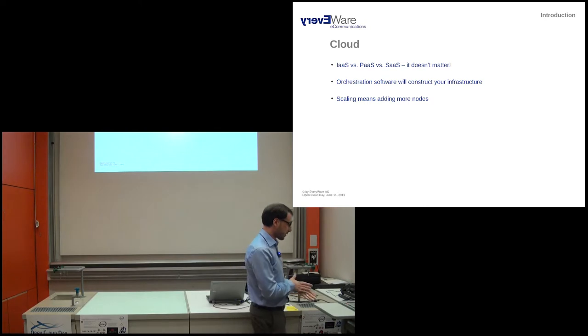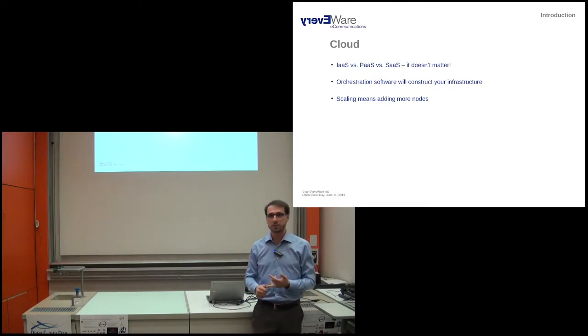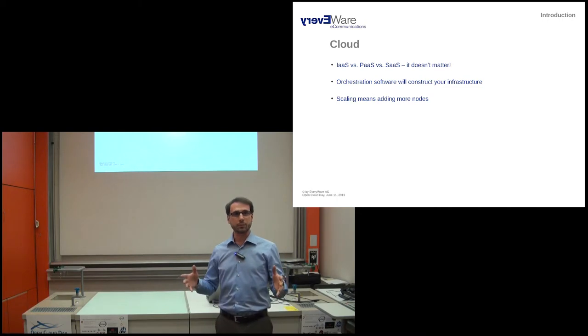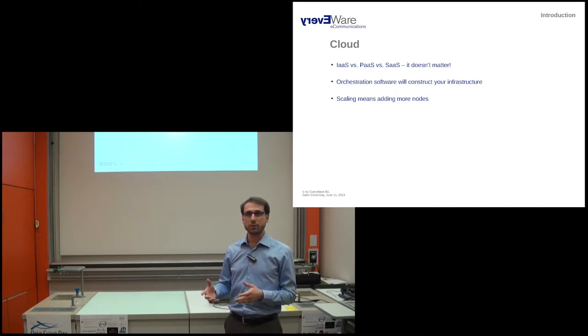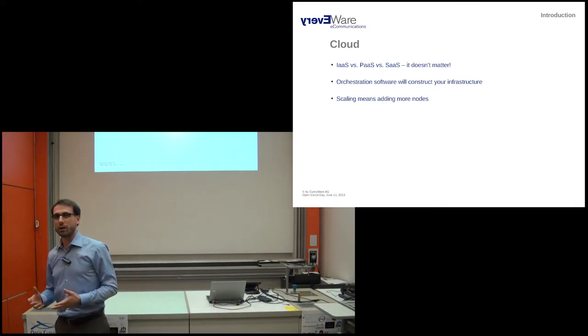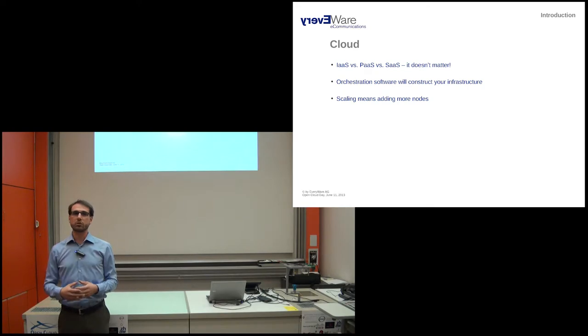And that brings us to scale. Scale is typically understood as being in two dimensions. You can scale up, which means you add more resources to an already existing node. If you need more RAM, you can add more RAM. Same thing with disk or CPU power. Or you can scale out, which means adding more nodes. And typically at cloud scale, what we talk about is scaling out. You want to add more nodes in order to do the same things that existing nodes already accomplish.